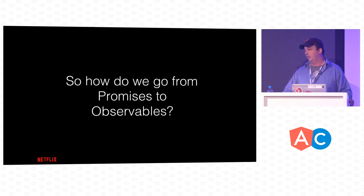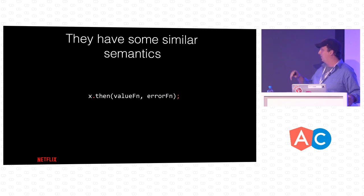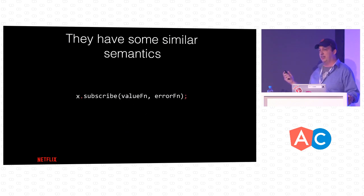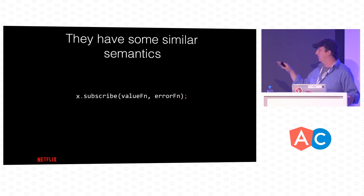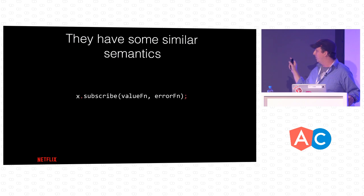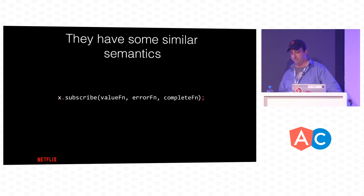So how do we go from promises to observables? They have similar semantics. If I have a promise X and I'm calling then on it with my value function and error function, to use an observable I just call subscribe in exactly the same way. My value function gets called zero to N times for however many values my observable emits. My error function is called if there's an error. And I provide a completion handler to know when it's done — very similar.